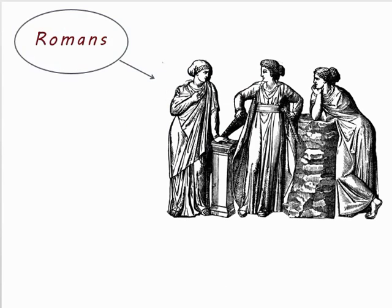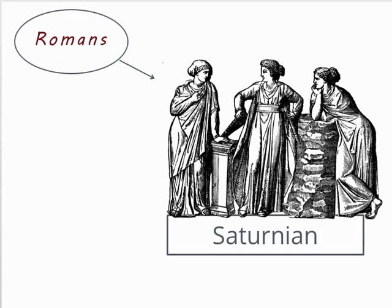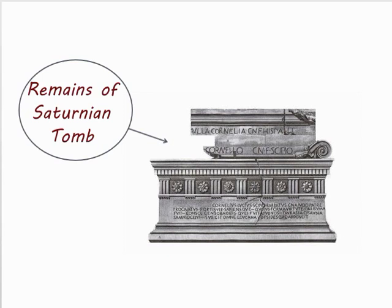The Romans did have their own meters, the most famous of which is the Saturnian. Unfortunately, it is obscured by the mists of time, but subject to much speculation by scholars.